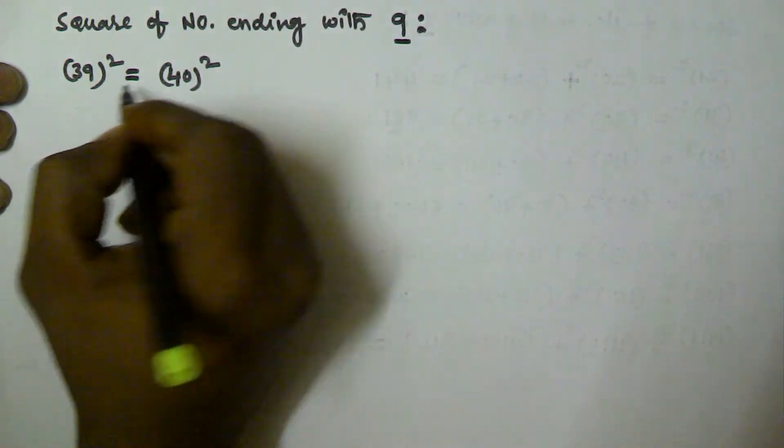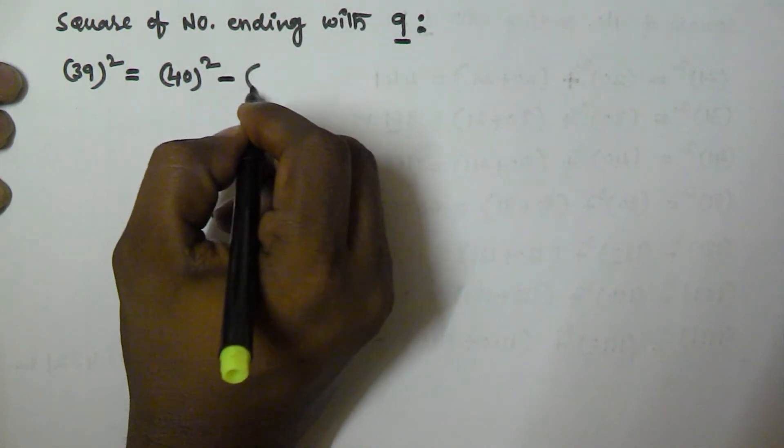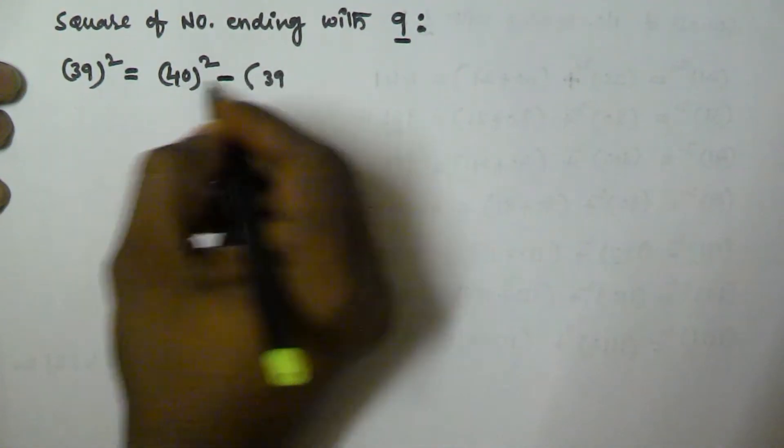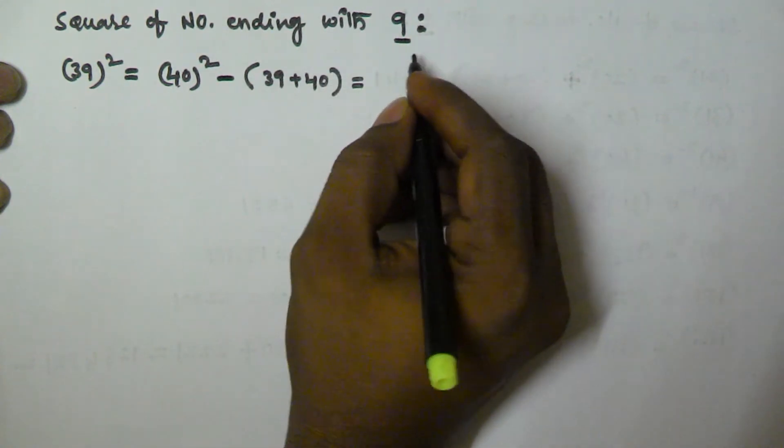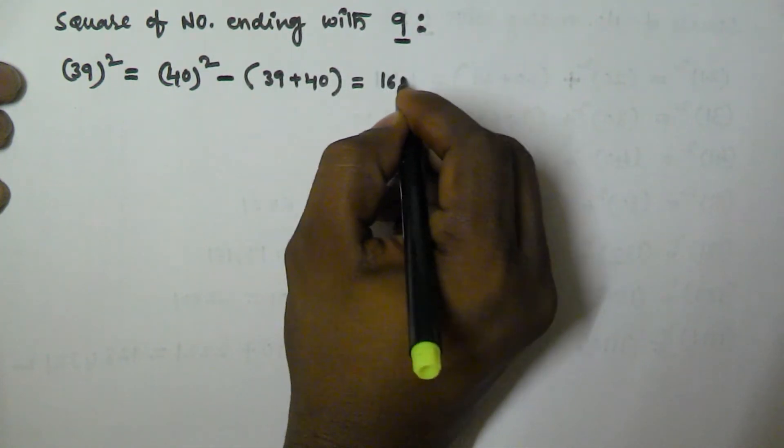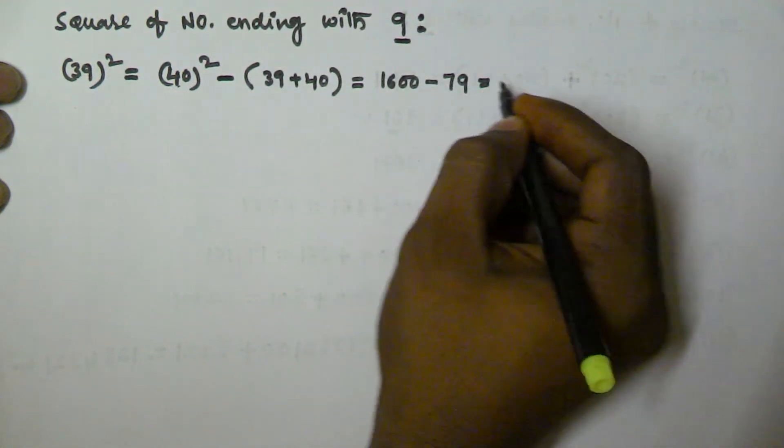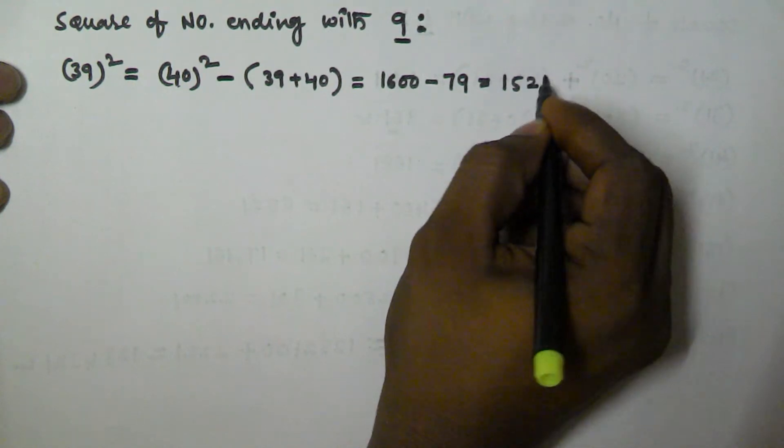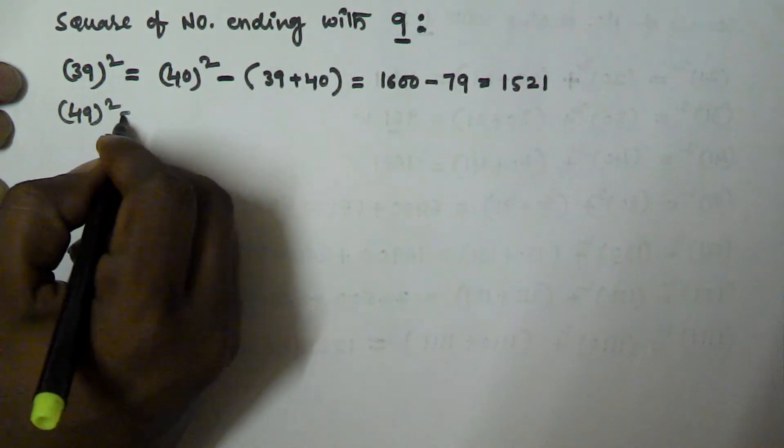So we have to subtract something from this one: minus 39 and then 40 plus 40. So this is equivalent to 1600 minus 79, which equals 1521. Let's find 49 square, which is equivalent to 50 square minus 49 plus 50.